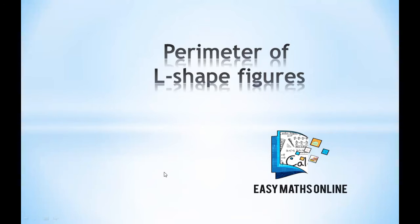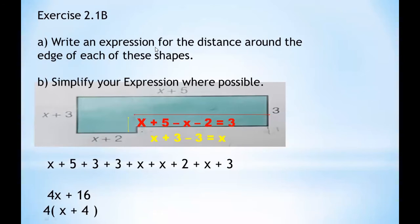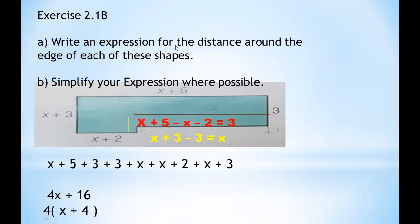Look at this shape. The question says: write an expression for the distance along the edges of each of the following shapes. What do you mean by edges? It just means all the boundary lines. So even though they didn't directly say 'find the perimeter,' the question is asking you to find the perimeter — all the boundaries of this shape.